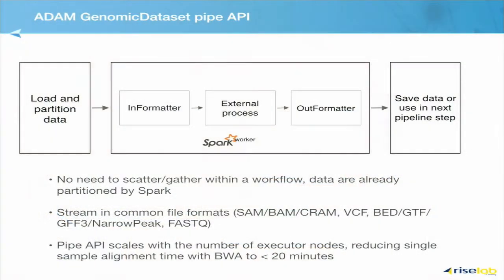The API I'm going to talk about today is the Pipe API. When you pull any of those flat file datasets into Spark, you end up with what we call a genomic dataset. This Pipe API lets you take that partitioned data and stream it out to an external application over a pipe, with formatters to and from the external process. By using this Pipe API, you can scale up larger than a single node — up to the total number of executor nodes on your cluster.